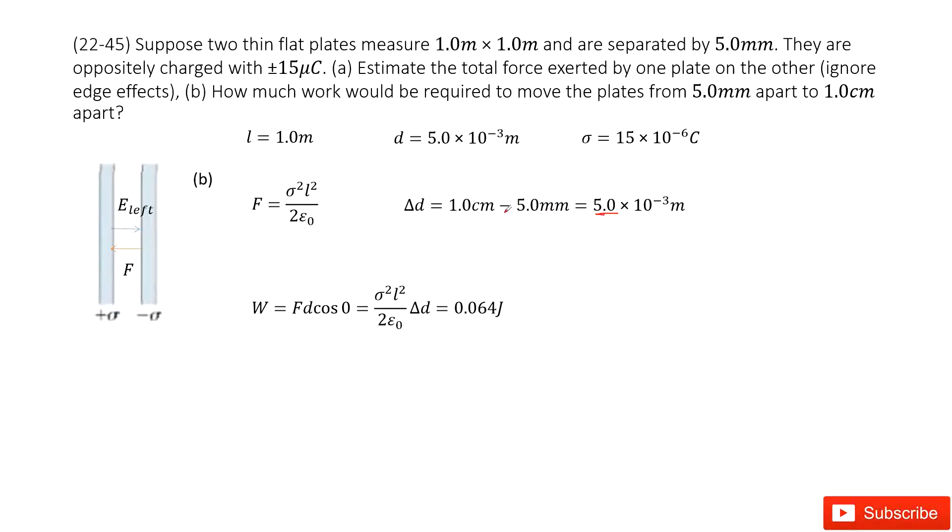As we know, the work done by the force is the force times the distance it moved, times cosine θ. In this case, θ is zero, so we have the force times the distance it moved.